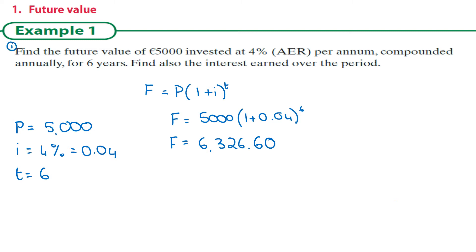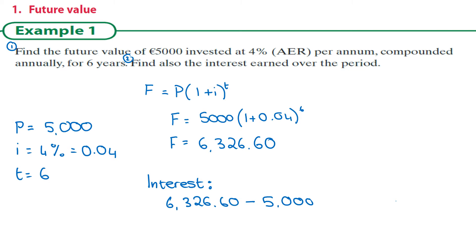The second part was to find the interest earned. The interest can be easily calculated by getting the difference between what my investment will be worth in the future and what it is currently worth. So your future value answer minus five thousand gives us the interest — one thousand three hundred and twenty-six euro and sixty cents.